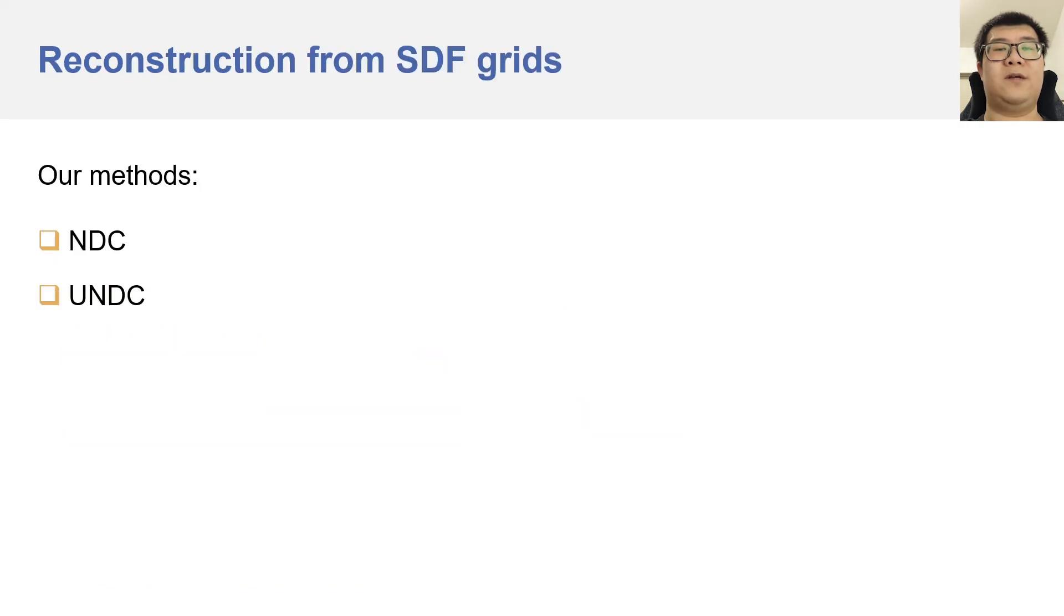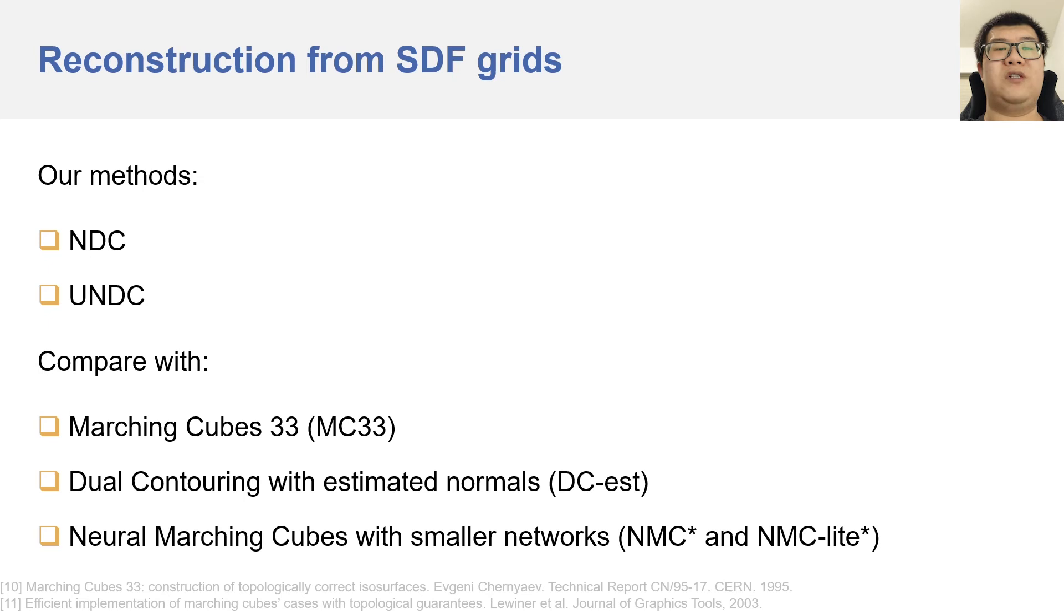In our first experiment, we reconstruct meshes from grids of signed distances. We compare our method, both the signed and unsigned versions, with marching cubes 33, dual contouring with estimated normals, and two versions of neural marching cubes. We replace the 3D CNN networks in NMC with our networks used in NDC, to have a fair comparison with respect to the inference time.